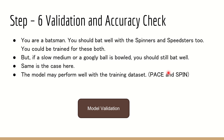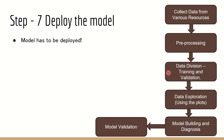The sixth step is validation and accuracy check. Think of a batsman trained to bat against spinners and speedsters — he should still be able to handle a slow medium or googly ball. Similarly, the model should perform well within the training set and also on new data. The model must respond to input properly and predict things correctly. The seventh step is to deploy it. So in summary: collect data, pre-process it, split into training and validation, explore, build the model with necessary diagnostics, validate, and then deploy.